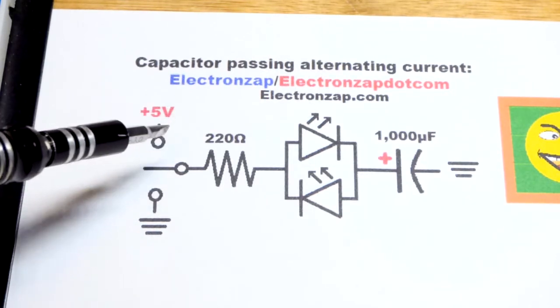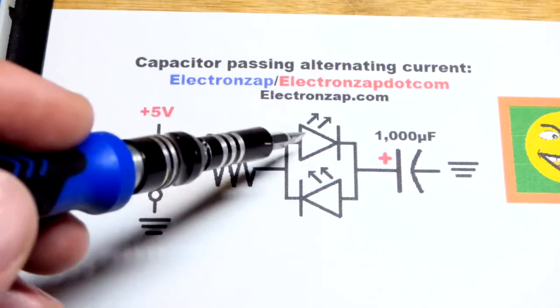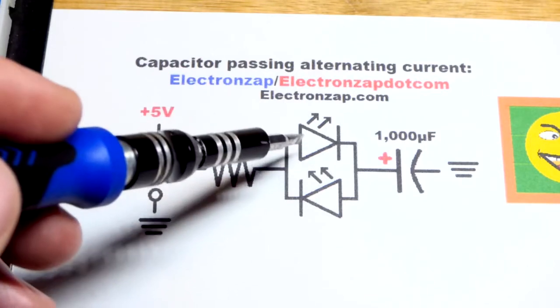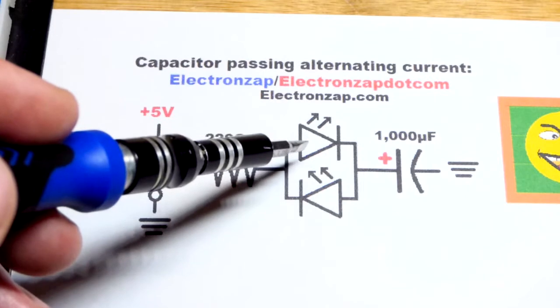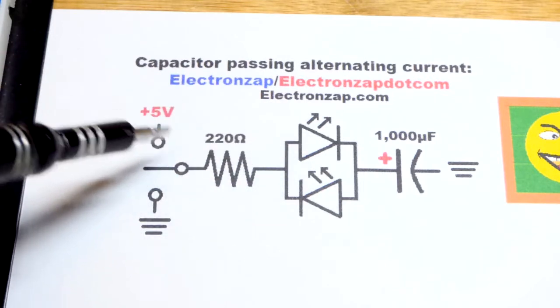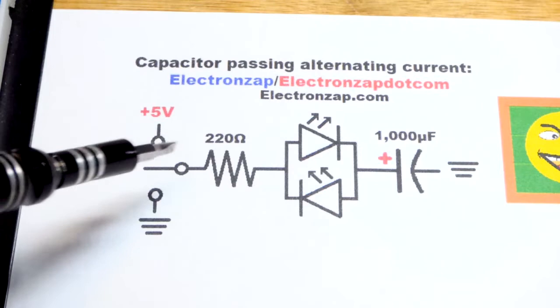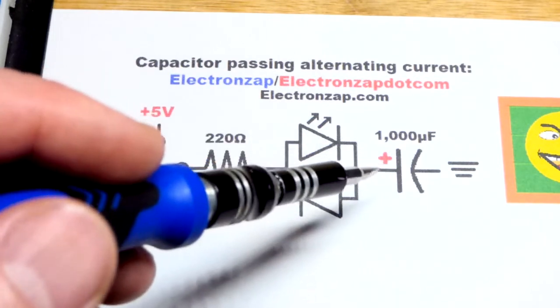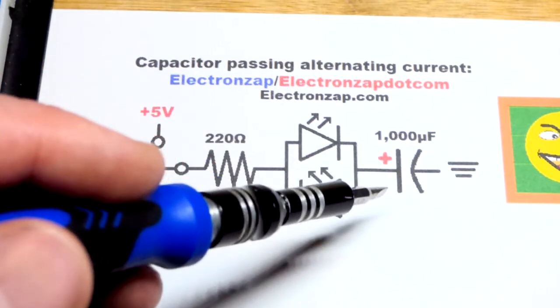But in any case, when we have it to the positive supply, the red LED will light up just briefly, and then it will be out for good, as long as we hold the jumper to the positive supply, because the capacitor does not pass direct current.